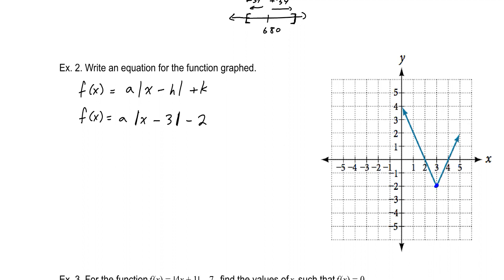Now to find the stretch value here, we want a point that is on our graph. Any point will do. I'm going to use the point (4, 0). That tells me when the input is 4, the output is 0. So I'm going to write this equation: 0 equals a times the absolute value of 4 minus 3, minus 2. The absolute value of 4 minus 3 is 1, so this gives me the equation a minus 2 equals 0, meaning that a equals 2.